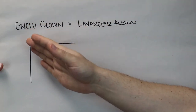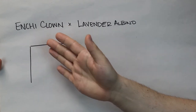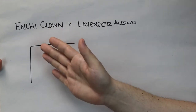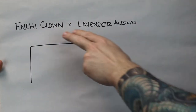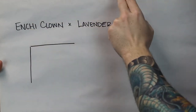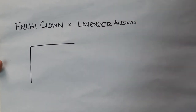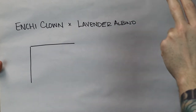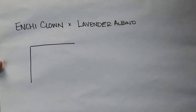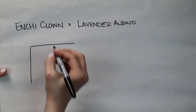So enchi is a codom. If you remember, when you breed enchi to a normal, you have two options: you're either going to get an enchi or you're going to get a normal. So we're going to put those two options up top.